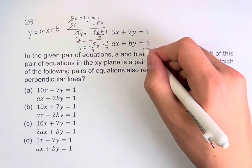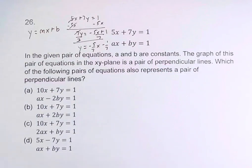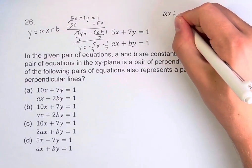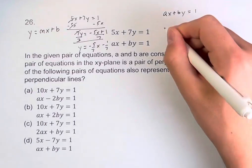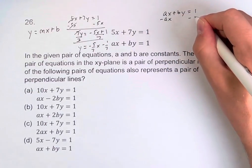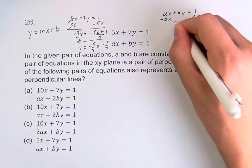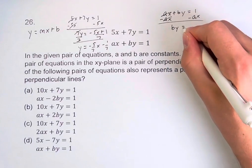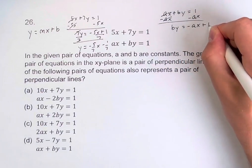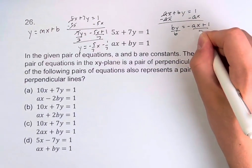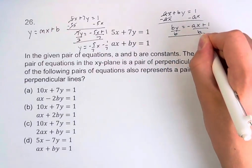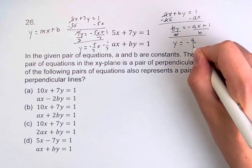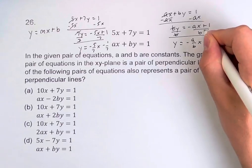For this equation, we're not going to be able to get an exact number, but we'll see why this is helpful in a second. We have ax plus by equals 1. We want to get y on its own, so subtract ax from both sides. These cancel and we're left with by equals negative ax plus 1. Dividing by b on both sides, these cancel, giving y equals negative a over b, x plus 1 over b.